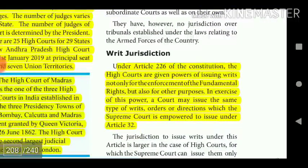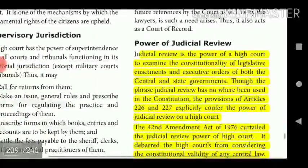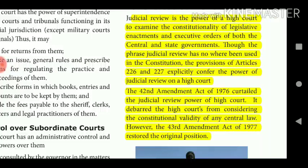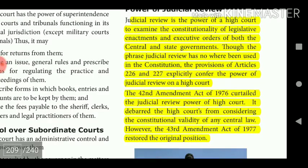Under Article 226 of the Constitution, High Courts are given powers to issue writs not only for the enforcement of fundamental rights but also for other purposes. A High Court may issue the same types of writs, orders, or directions which the Supreme Court is empowered to issue under Article 32. Judicial Review is the power of a High Court to examine the constitutionality of legislative enactments and executive orders of both the Central and State Governments. Though the phrase 'Judicial Review' has nowhere been used in the Constitution, Articles 226 and 227 explicitly confer this power on the High Court. The 42nd Amendment Act of 1976 curtailed the judicial review power of the High Court, but the 43rd Amendment Act of 1977 restored the original position.